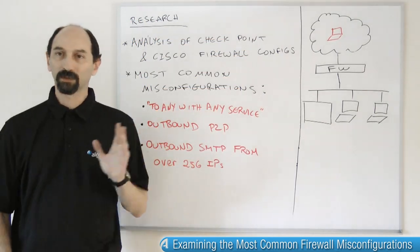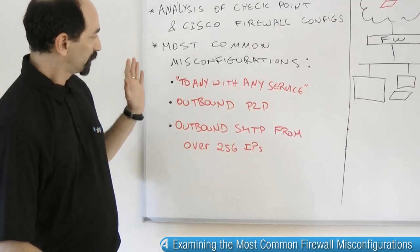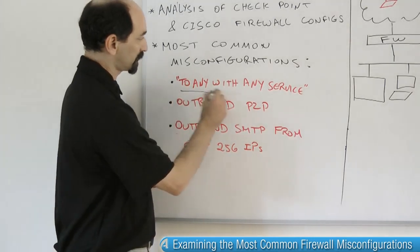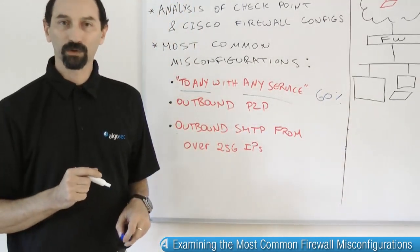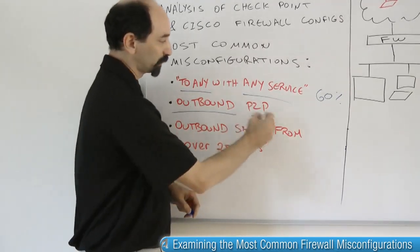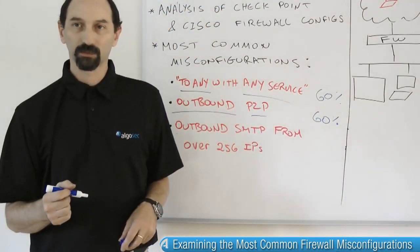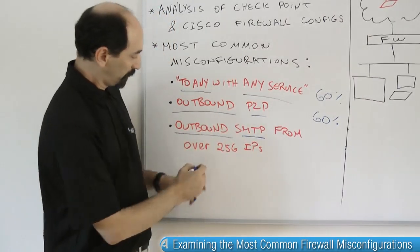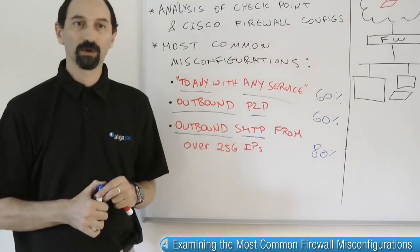The three most common misconfigurations observed in this study were the following. First, rules that said to anywhere with any service were detected in close to 60% of firewall configurations investigated. Second, firewalls that allowed outbound peer-to-peer traffic were detected in around 60% of firewalls surveyed. Third, firewalls that allowed outbound email — SMTP — from a large number of IP addresses were detected in some 80% of firewall configurations.